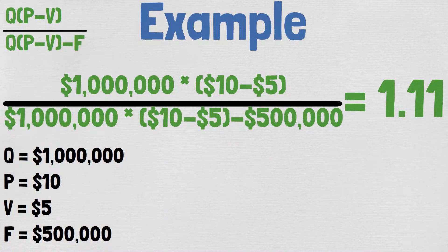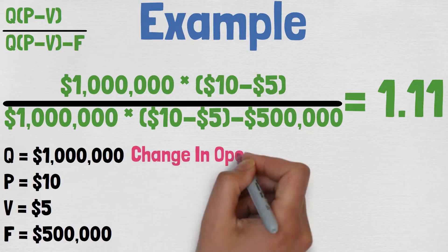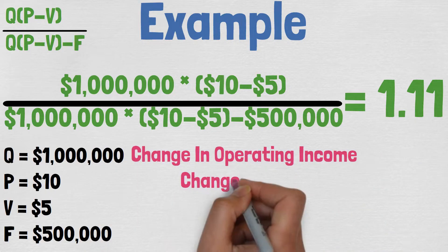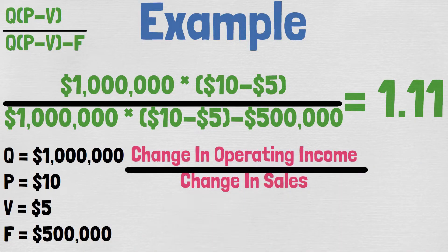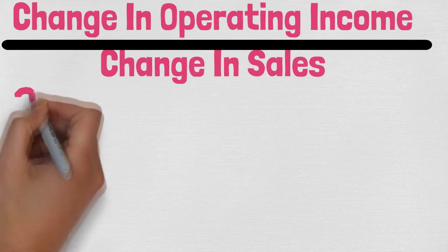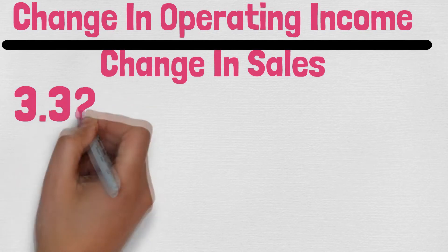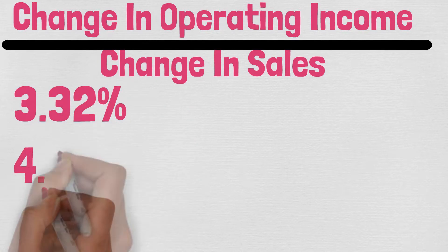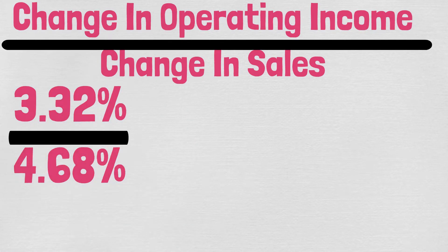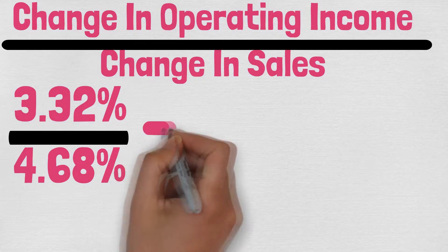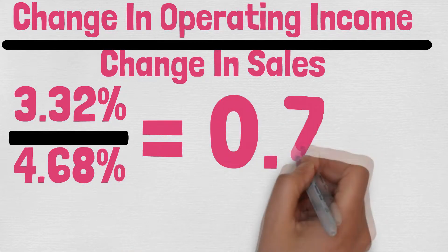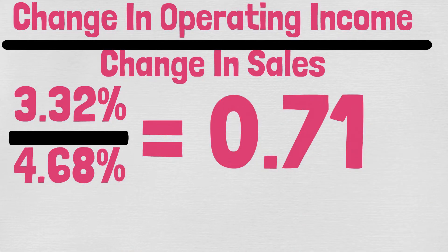If you want to use the other formula — for example, Intel's operating income for the trailing 12 months has changed 3.32% and their sales have changed 4.68%. This means that Intel's degree of operating leverage is 0.71.